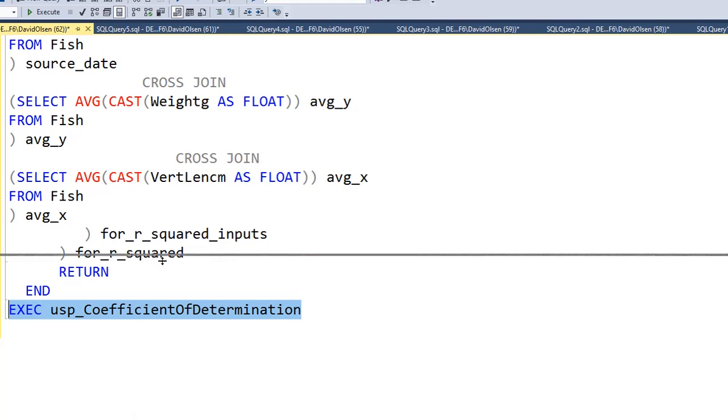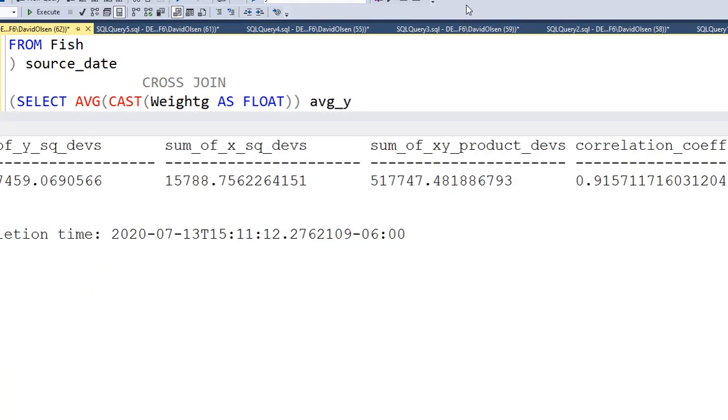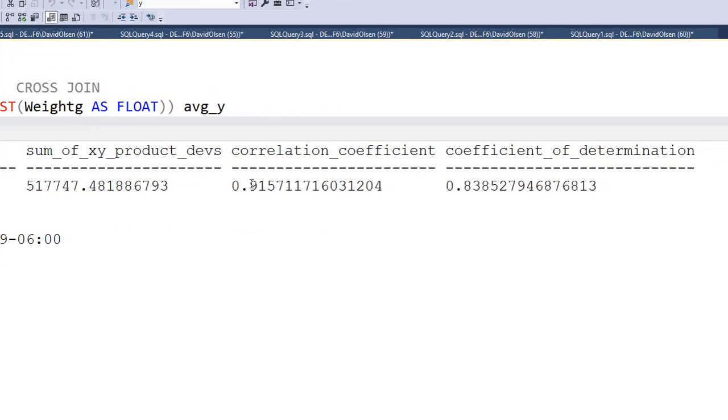And let's take a look. And really what we want to see are these last two statistics. Our correlation coefficient, the 0.915. And then our regression statistic is 0.838. Which are the same as what we calculated in Excel. But we have a lot of decimal points here.